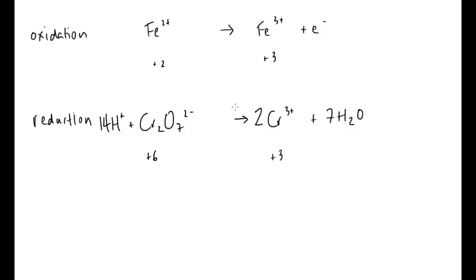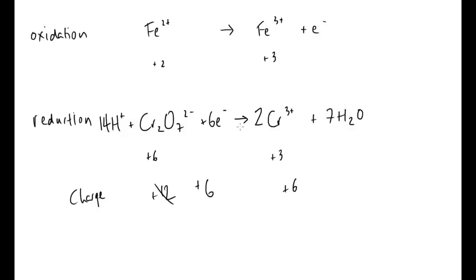Chromiums, oxygens and hydrogens are now balanced. But the charges are not balanced: the left side has 14 minus 2 equals plus 12 in total, and the right side has plus six. To balance the charges we add six electrons to the left side. This gives us balanced charges, and the equation confirms the definition of reduction as gain of electrons.